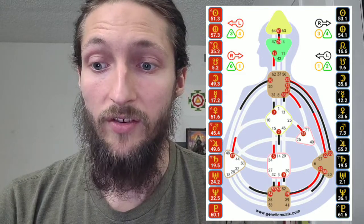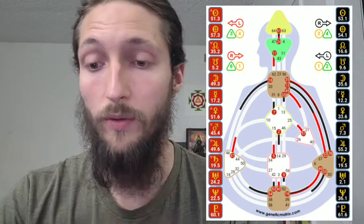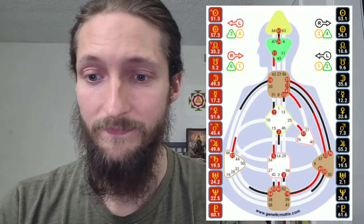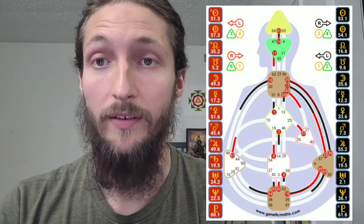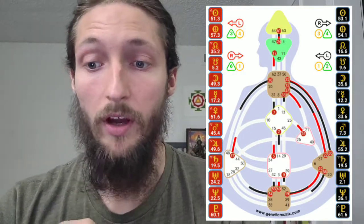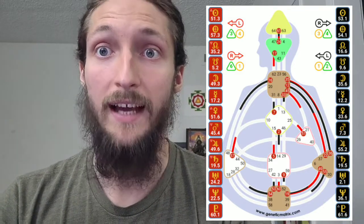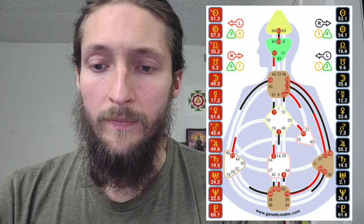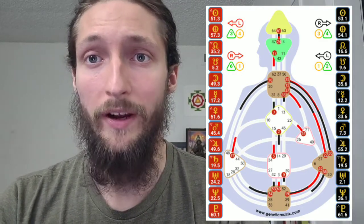The solar plexus is fundamentally where our awareness is moving as a species. Looking all the way to the left at the splenic center, it's very open except for an undefined gate 57. That 57 is within the unconscious — the design, which is the technical term for the body and the unconscious mind. All the red you see in the body graph demonstrates imprints within the design. That splenic center is very open — this is where existential survival awareness actually rests.